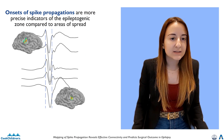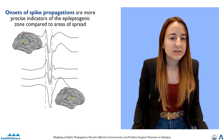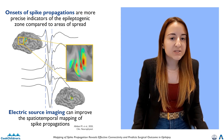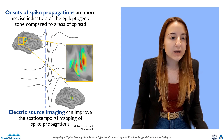Several studies have shown that spikes propagate across multiple intracranial contacts, defining a network, and their onset is a more precise indicator of the epileptogenic zone. Recent studies from our group suggest that electric source imaging improves the conventional intracranial reading, and thus we can use it to better delineate spike propagations.